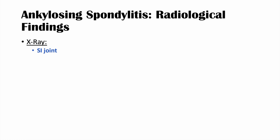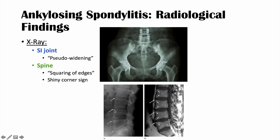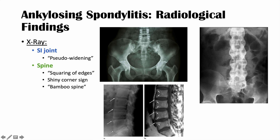There are important radiological features in ankylosing spondylitis. On x-ray of the sacroiliac joint, we can see pseudo-widening. On x-ray of the spine, we can see squaring of edges or the shiny corner sign, where the corners of the vertebrae appear shiny due to inflammation. As the condition progresses, bones fuse and the spine develops what we call bamboo spine — a classic x-ray finding where the vertebrae are all fused with no separation. Bamboo spine is pathognomonic for ankylosing spondylitis.